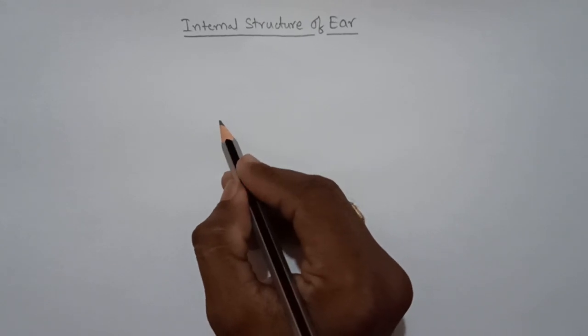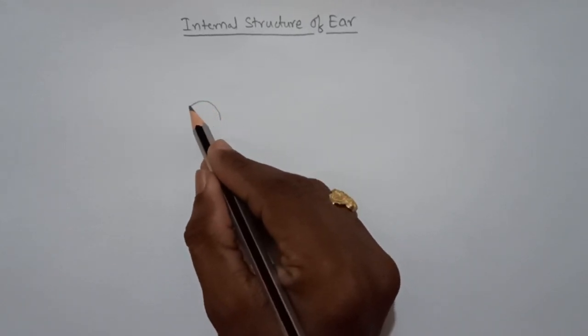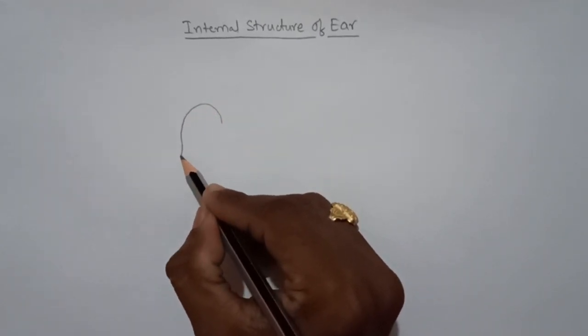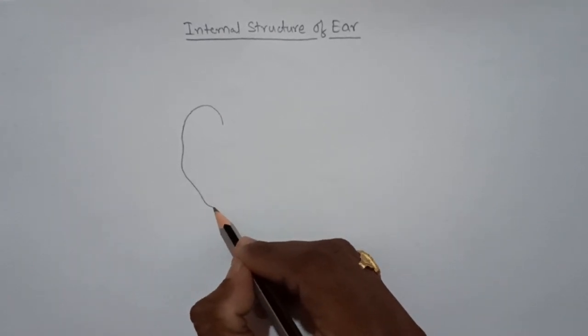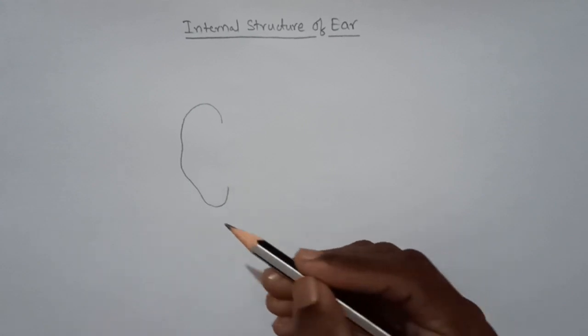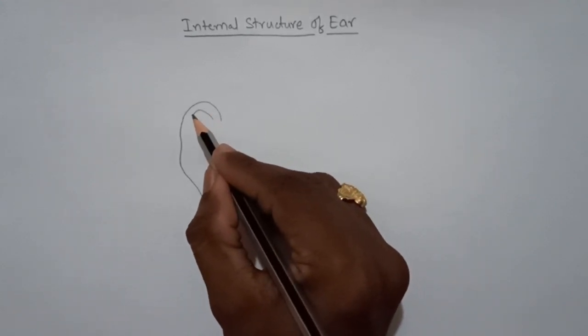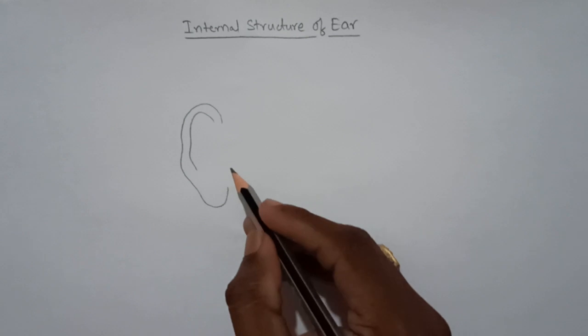Let's begin. First of all, we have to draw the external ear, also called the ear pinna, like this. And then the earlobe.